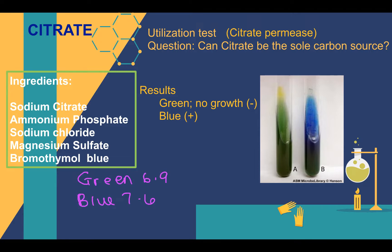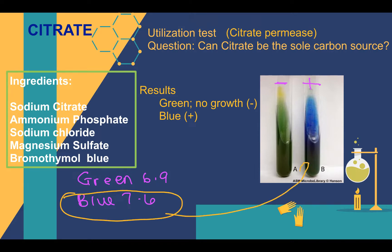In the tubes shown, the green tube is considered negative and the tube that turned blue is considered positive. The color change occurs because any bacterium able to survive and utilize the citrate can also convert the ammonium phosphate in the medium to ammonia and ammonium hydroxide. These both cause the agar to become more alkaline, resulting in the blue color — a positive test.